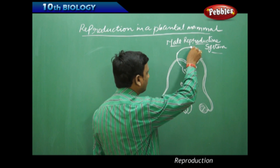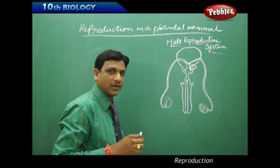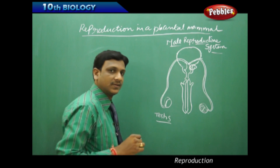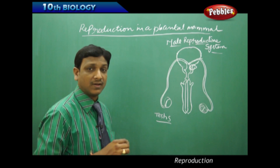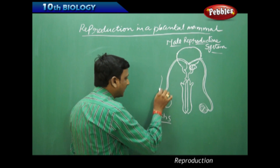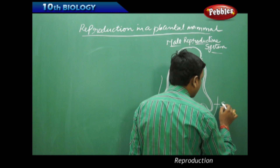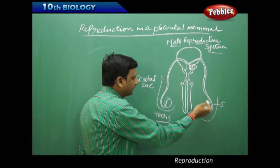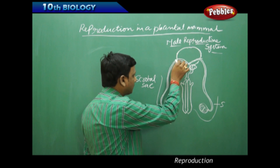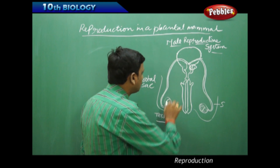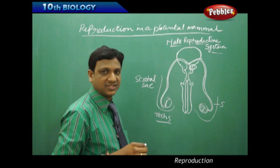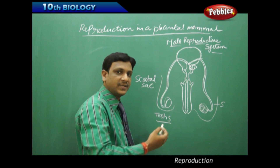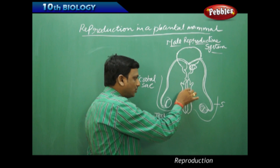The male reproductive system is closely associated with the urinary bladder. The two main organs are a pair of testes. The left and right testes are present outside the body, hanging in a pocket-like structure called the scrotal sac. The testis is connected to a tube-like structure leading to the penis, connected to the urethra. The urethra is a common passage for male gametes and urine — both reproductive and excretory material pass through this common duct.